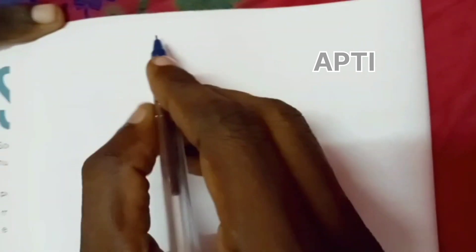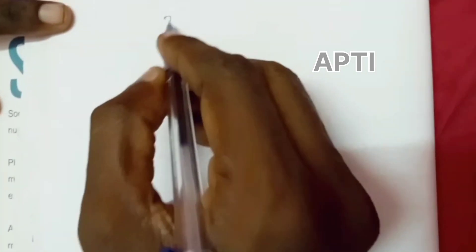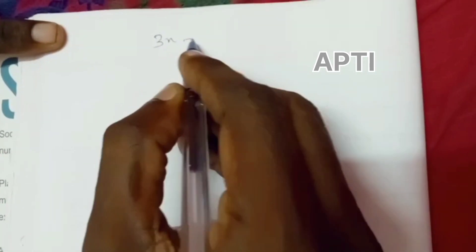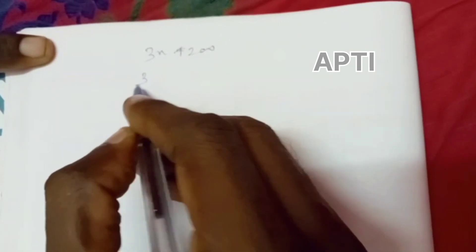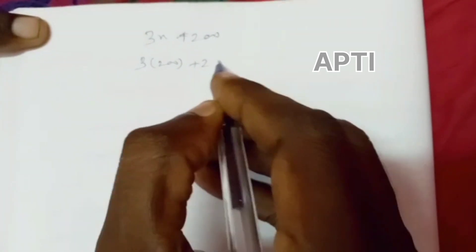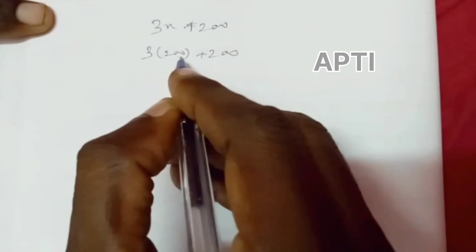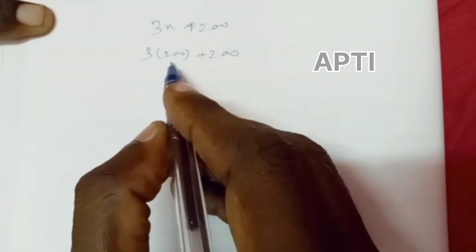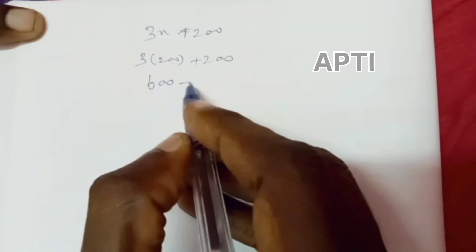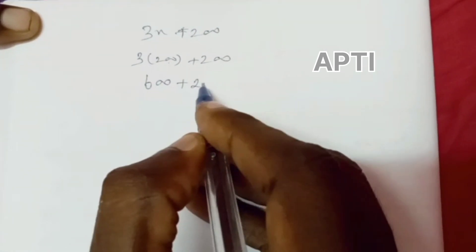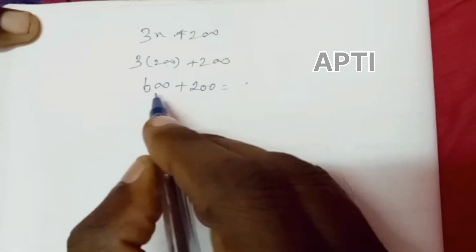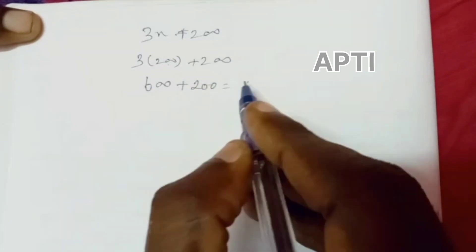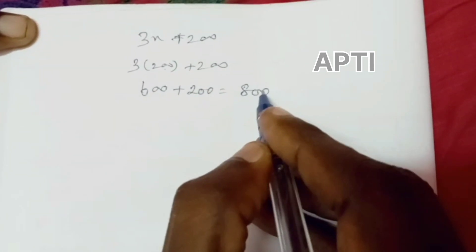The number of female employees finally is 3x plus 200. Now x equals 200. So 3x equals 600, and 600 plus 200 equals 800.